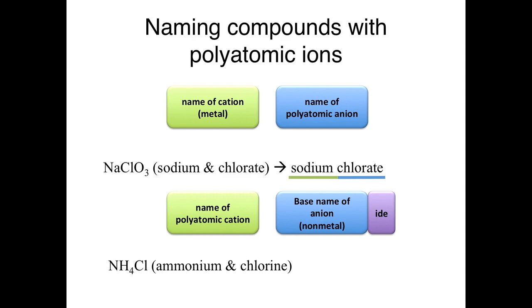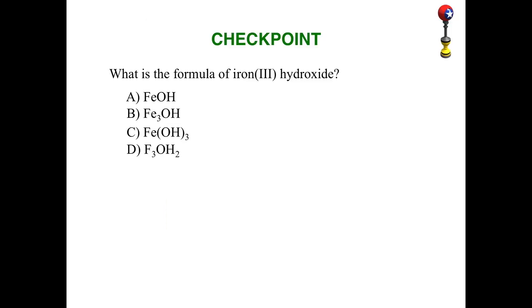And if you have ammonium, you simply say ammonium. So you just say, in this case, ammonium chloride. Again, it's chloride because your anion is the chlorine.